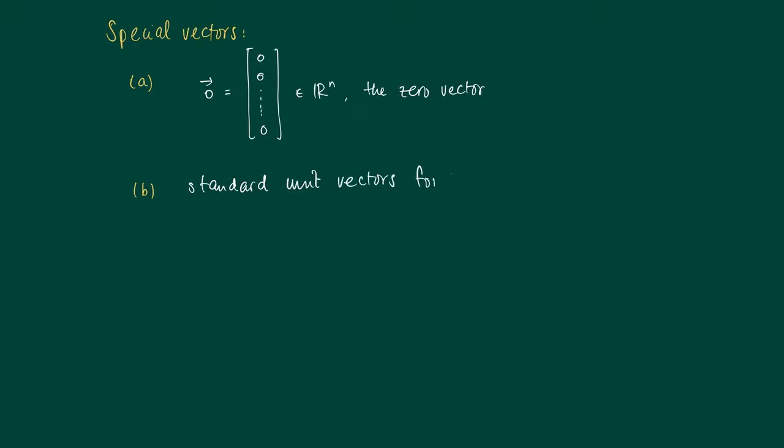There are n such vectors. The first one is E1, which has a one on the first coordinate and all the other coordinates are zero. The second standard unit vector has a one on the second coordinate and all the other elements are zero, and so on.